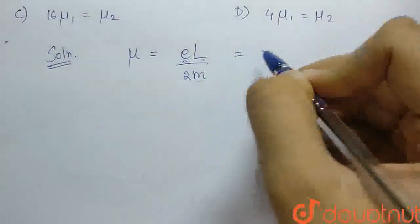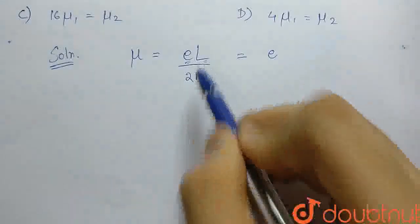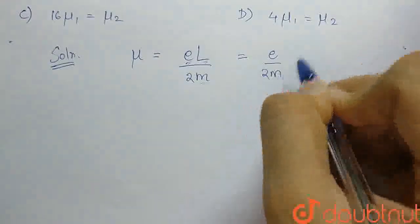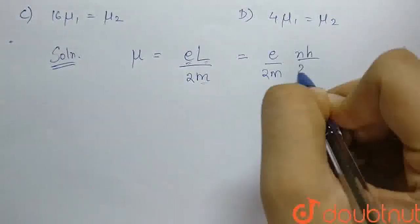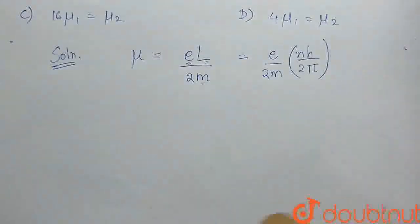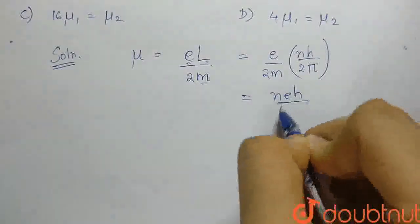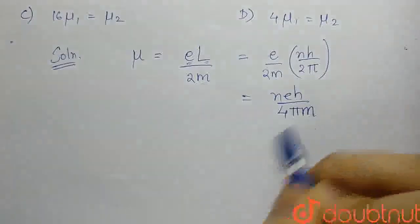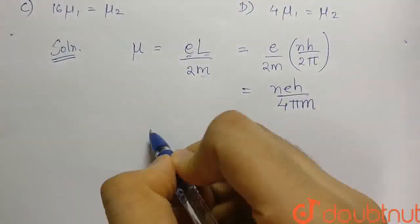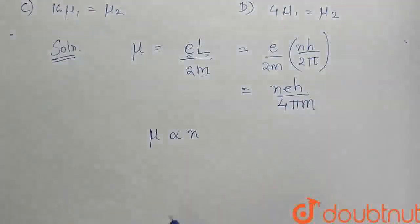According to Bohr's quantization rule, we can write L as nh by 2π. This becomes nh by 2π, where n is the principal quantum number. So this becomes n e h by 4π m. From here it's clear that our magnetic moment mu is proportional to n.